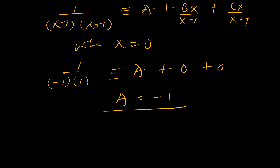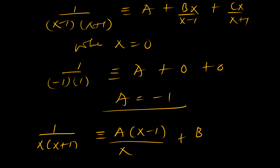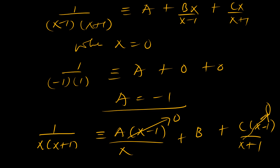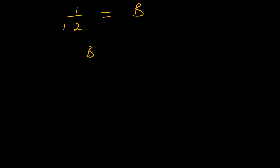Multiplying both sides by (x minus 1), we get 1 over (x times (x plus 1)) equals A(x minus 1) over x plus B plus Cx(x minus 1) over (x plus 1). Setting x equal to 1, most terms go to 0, and we get 1 over (1 times 2) equals B. So B equals one half.